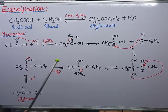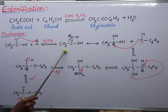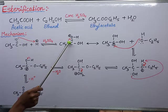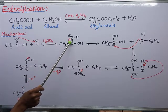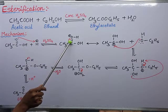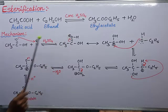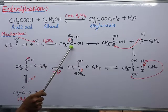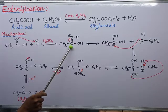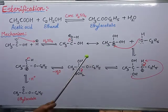Now I need to nullify this positive charge. In order to do so, I'm shifting the double-bonded electrons towards the oxygen. When I shift these electrons towards oxygen, the positive charge on oxygen is nullified, and a positive charge forms on the carbon — you can see there is a carbocation formation.